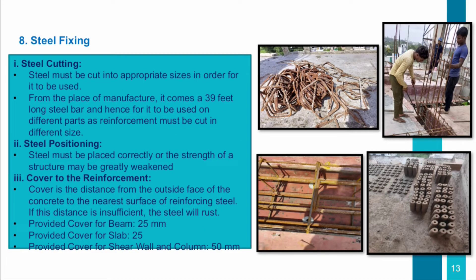Steel fixing. First, steel cutting: steel must be cut into appropriate sizes in order to be used. It comes from the manufacturer as 39-feet-long steel bars and must be cut into different sizes for different reinforcement purposes. Secondly, steel positioning: steel must be placed correctly or the strength of a structure may be greatly weakened. Cover to reinforcement is the distance from the outside face of the concrete to the nearest surface of reinforcing steel — if this distance is insufficient, the steel will rust. Provided cover for beam was 25 mm, for slab was 25 mm, and for shear wall and column was 50 mm.